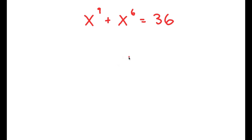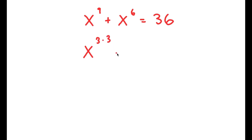In this problem, I have x to the power of 9 plus x to the power of 6 is equal to 36. To solve this, I'm going to first start by rewriting this as x to the power of 3 times 3 plus x to the power of 3 times 2 is equal to 36.